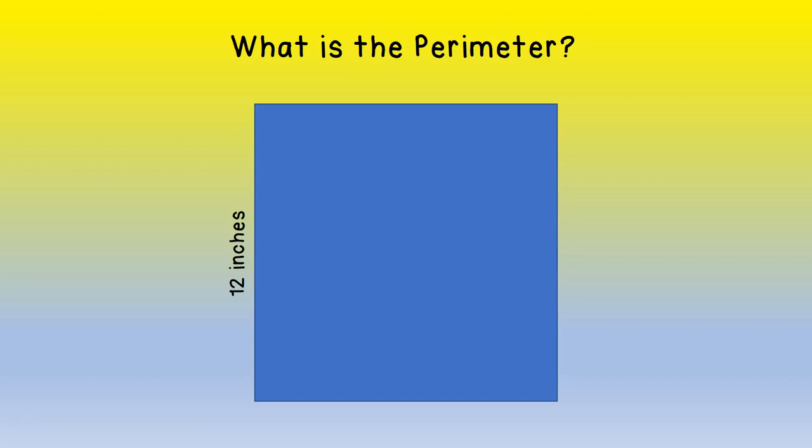In this particular case, we have a square. Again, we only have one side that has been measured and labeled and that side is 12 inches. Use what you know about a square to find the perimeter.